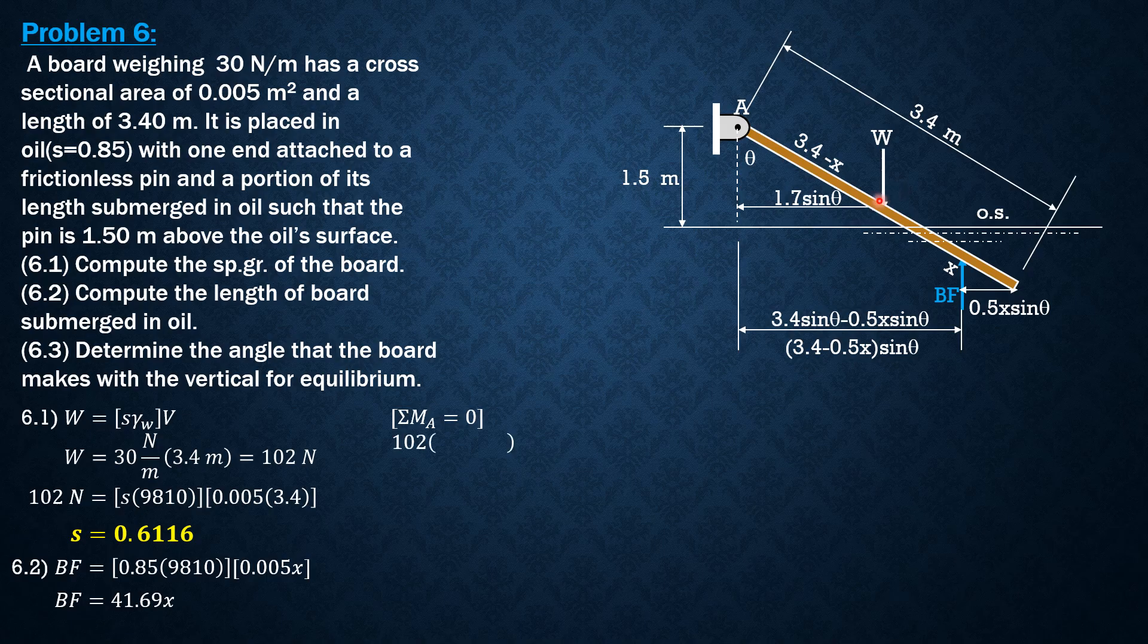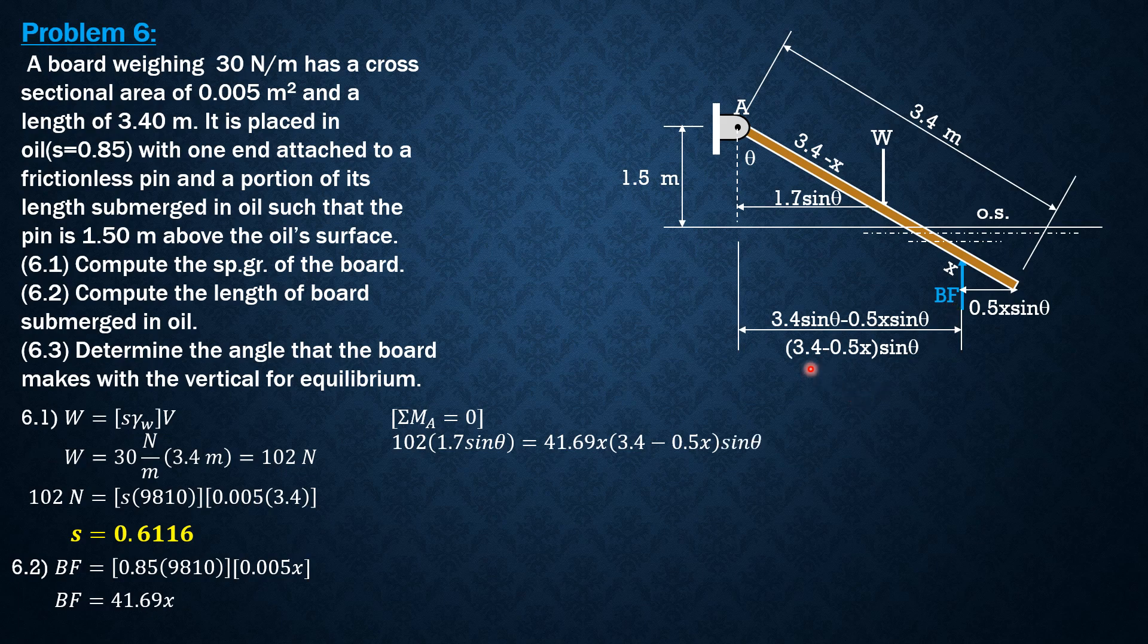Weight is 102, moment arm 1.7 sine theta equals buoyant force 41.69x moment arm quantity 3.4 minus 0.5x quantity times sine theta. We can cancel sine theta. Let's simplify. 102 times 1.7 is 173.4. 41.69x times 3.4 is 141.75. 41.69x times negative 0.5x is negative 20.845x square.